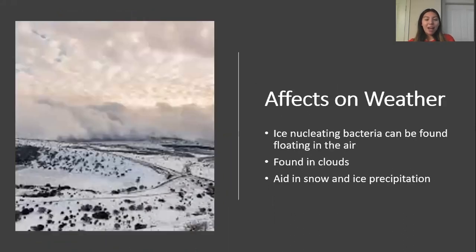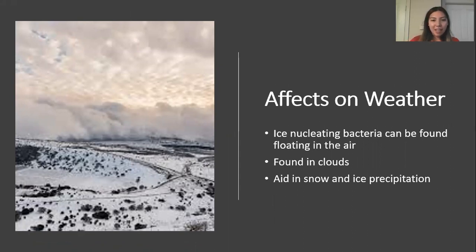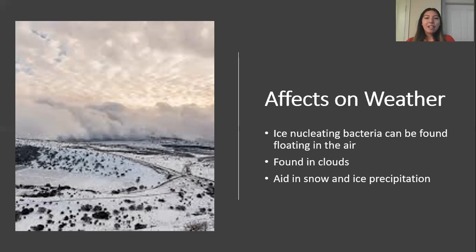Ice nucleating bacteria also have some effects on weather. These bacteria can be found pretty much everywhere, including in the atmosphere just floating around in the air. They are also found in clouds, and many scientists are researching how these bacteria can cause snow and ice precipitation.